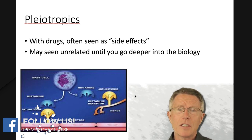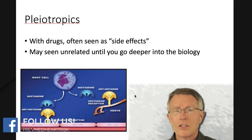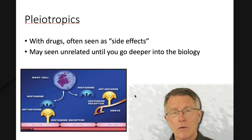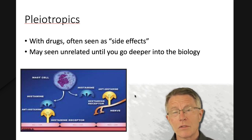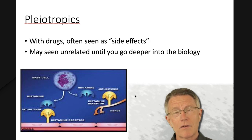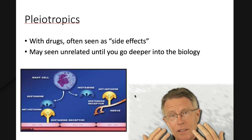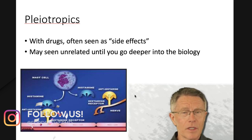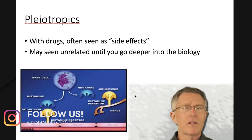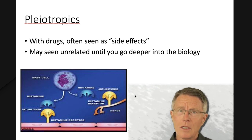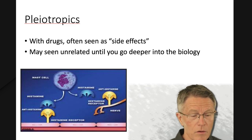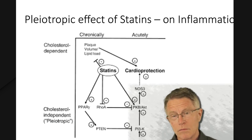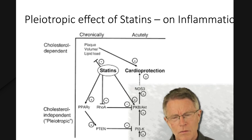With the Marfan's gene, it changes the way the body makes connective tissue. Places where connective tissue is a big deal include the shape of the chest, how long fingers are, eyes, and the aorta — which can kill Marfan patients at age 30 — and the mitral valve. All of those things have to do with the Marfan gene's impact on connective tissue. So pleiotropics is basically a five-dollar word meaning multiple uses or multiple roles.